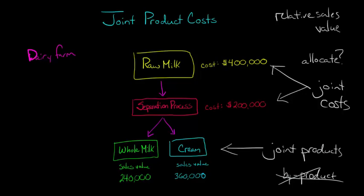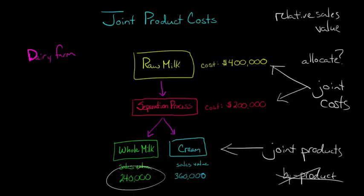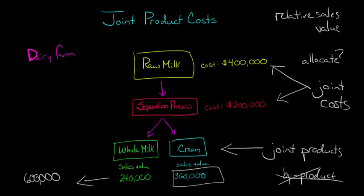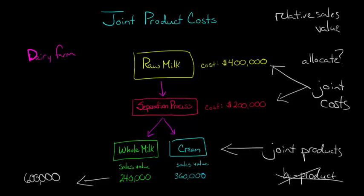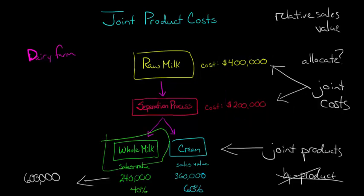For example, the sales value of the cream is $360,000 and the sales value of the whole milk is $240,000. Adding those together gives us $600,000. Taking the cream's sales value of $360,000 divided by the total sales value of $600,000 gives us 60%. So cream would be 60% and whole milk would be 40%. We could then say 40% of the joint costs are allocated to whole milk and 60% are allocated to cream.